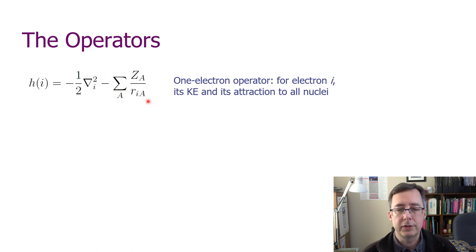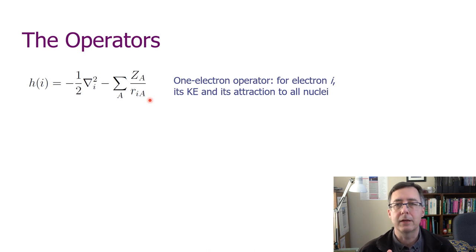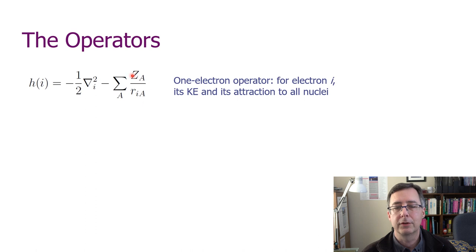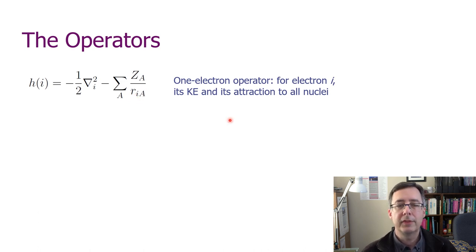The second piece is a potential energy term corresponding to the attraction each electron feels to all the nuclei. You might have multiple nuclei in a molecule, so we sum over all nuclei—represented by letters like A, B, and C—while electrons are represented by i, j, and k. Z_A is the charge on the nucleus: 1 for hydrogen, 2 for helium, etc.—basically the atomic number. This is just Coulomb's law. In atomic units, the product of charges gives a minus sign, and I just need the distance between electron i and nucleus A. This operator encapsulates all kinetic and potential energy ascribable to a single electron.